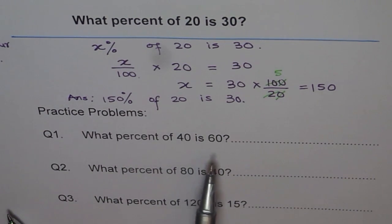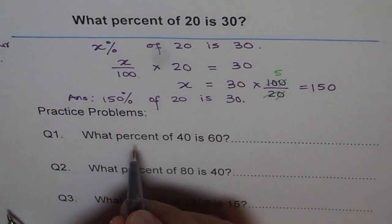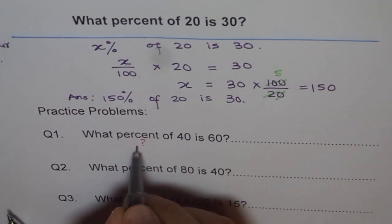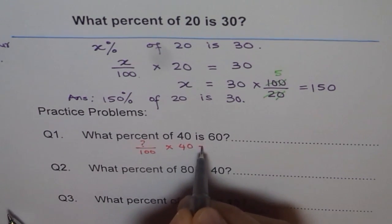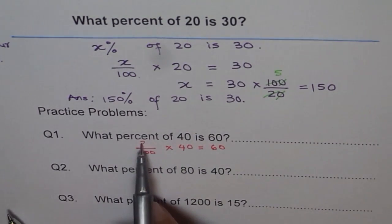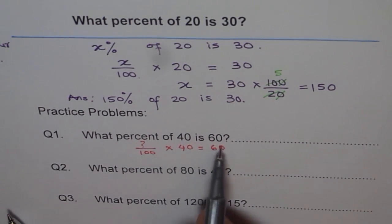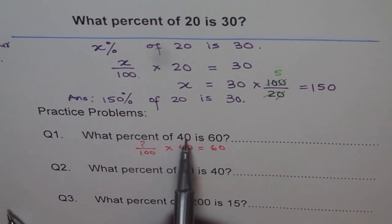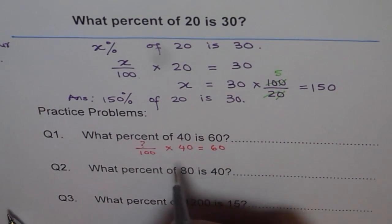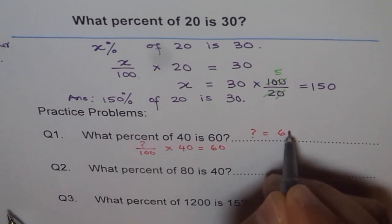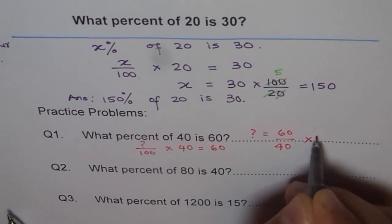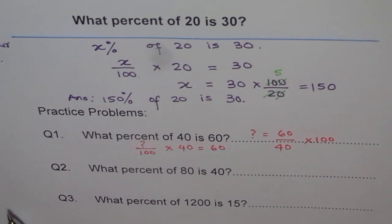What percent of 40 is 60? How will you write your equation? You don't know what percent, so you write x over 100, 'of' means times 40, 'is' means equal to 60. So x equals 60 times 100 divided by 40. Use your calculator to find the answer.